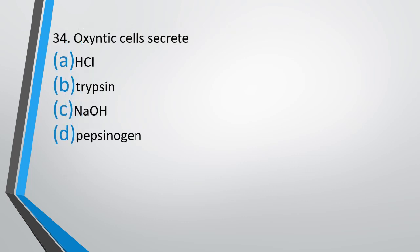Question number 34. Oxyntic cells secrete: HCl, trypsin, NaOH, or pepsinogen. The correct answer is option A — oxyntic cells secrete HCl.